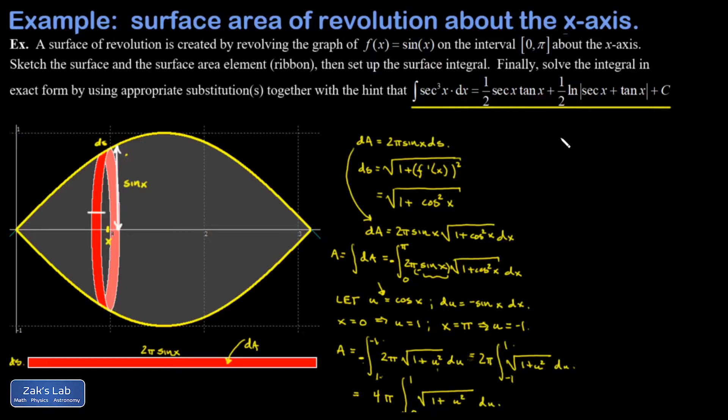All right, next step. I have a square root of 1 plus u squared. This is a classic trig substitution integral. I need to think of an identity that involves 1 plus something squared. And in this case, it's the tangent function. 1 plus tangent squared gives me secant squared. So I'm going to replace u with tangent theta. That means du is secant squared theta d theta. Again, I'm going to transform the limits of integration.